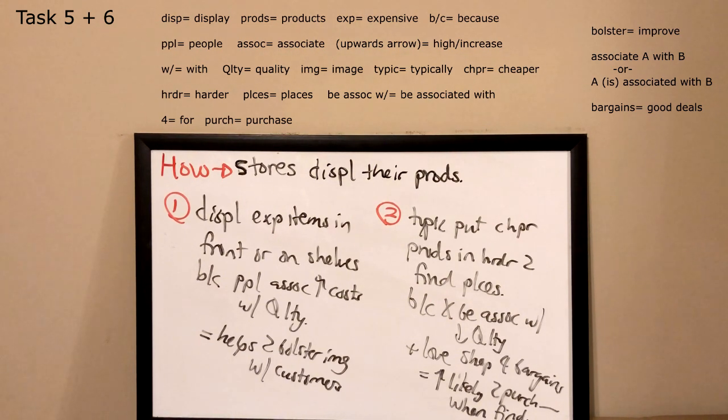All right, okay. Now let's look at the second section. Typically put cheaper products in harder to find places because not be associated with low quality and love shopping for bargains, so more likely to purchase something when find something. Bargains, if you don't know, mean good deal. All right, good deals. So love shopping for bargains means love shopping for good deals, love looking for cheap goods. All right, now that we know what we're gonna say, or what I'm gonna say, let's listen to my sample response.